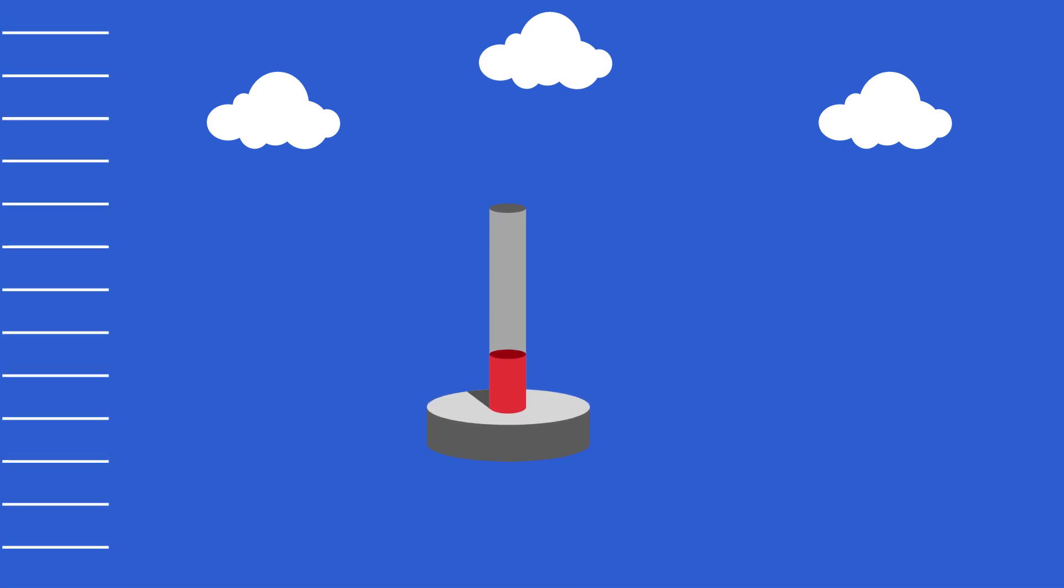In a standard atmosphere, 1,000 feet above sea level would have an ambient air pressure of 28.92 inches of mercury. Note that this is one inch lower than it was at sea level.